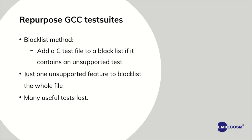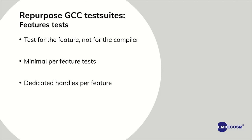Now, how do we do that? There was a previous method described in an earlier talk that used a blacklist. With a blacklist, you can add a test file to the blacklist if the compiler doesn't support one of the features that the test is testing against. But this meant that with just one unsupported feature, all the tests run on that file would be put into the blacklist, and we lost many useful tests that could have been run on that file.